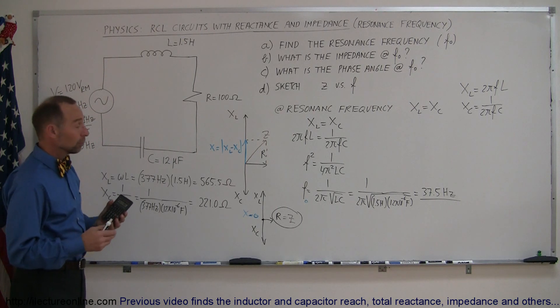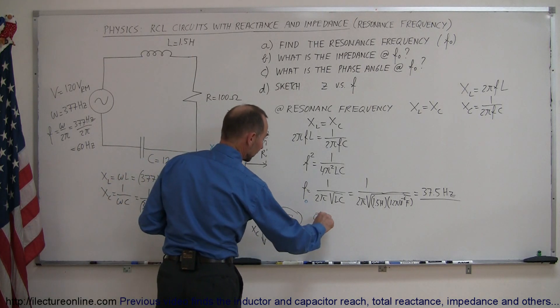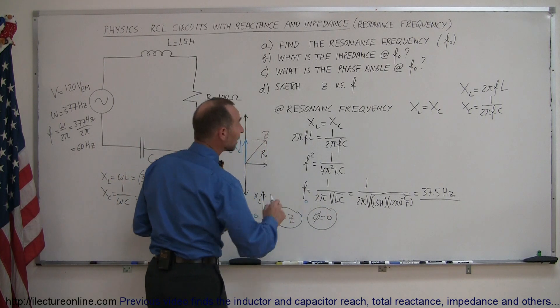What is the phase angle? Well, if R is equal to Z, then there is no phase angle. The phase angle is 0, so the phase angle equals 0.